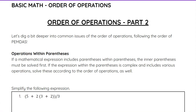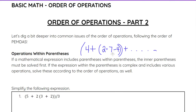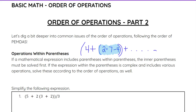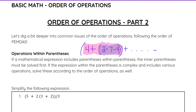Operations within parentheses: if a mathematical expression includes parentheses within parentheses — for example, four plus, another set of parentheses with two times seven minus four — the inner parentheses have to be solved first. So we would do the inner part first, then work our way to the outer set of parentheses, and then the rest of the expression.